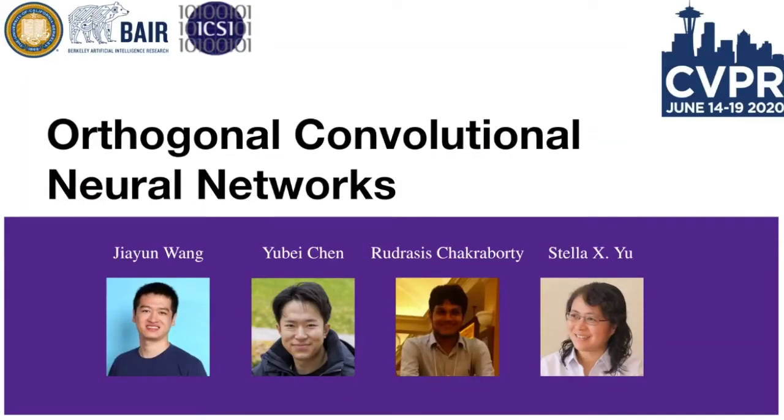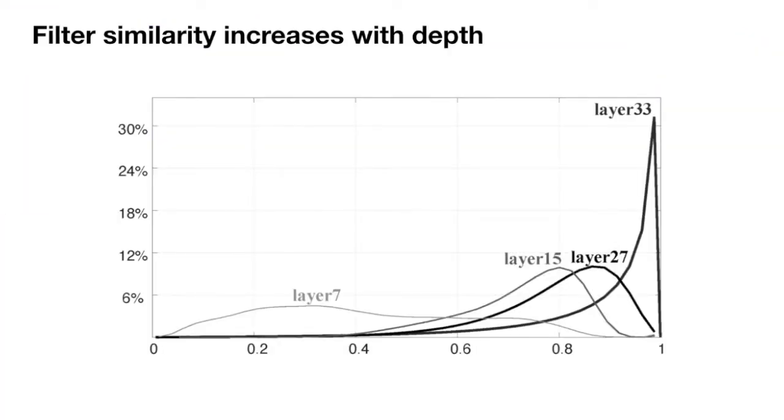We present a universal regularization for convolutional neural nets. Empirically, we observe the filter similarity in higher layers is much stronger than in the lower layers.